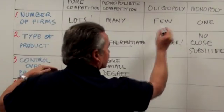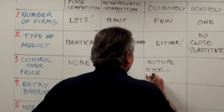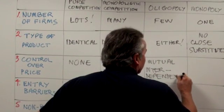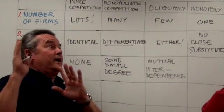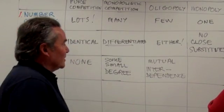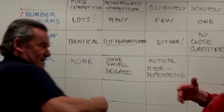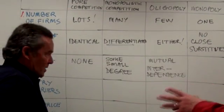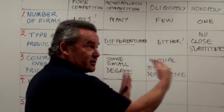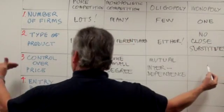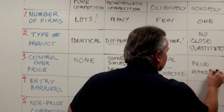For oligopoly, control over price involves fewness and mutual interdependence. Think of the kinked demand curve — prices can be sticky. Putting prices up is a bad outcome; putting prices down is not a good outcome either. You need to be aware of what your rivals are doing, because there are so few firms. The payoff matrix illustrates this. For monopoly, control over price is supreme — they are the price maker.